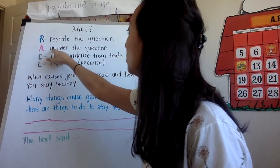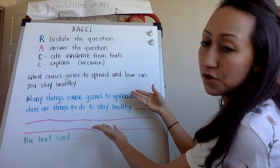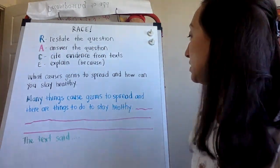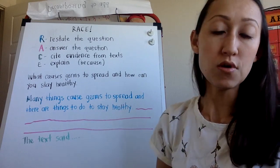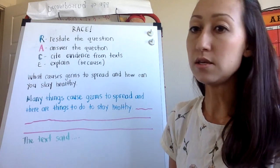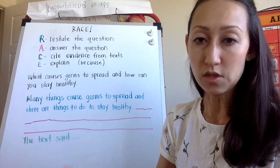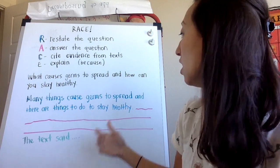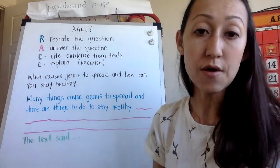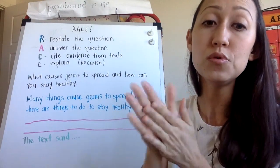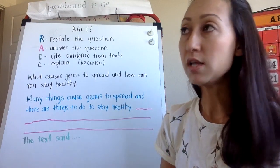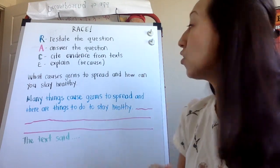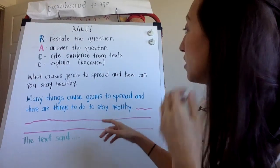For the second part, which is answer the question, you're going to answer what you just said. So you're going to say things like one way to cause germs to spread is by then you go ahead and write your answer. One way to stay healthy is to wash your hands or use a tissue when you sneeze and there's all different examples you can use.